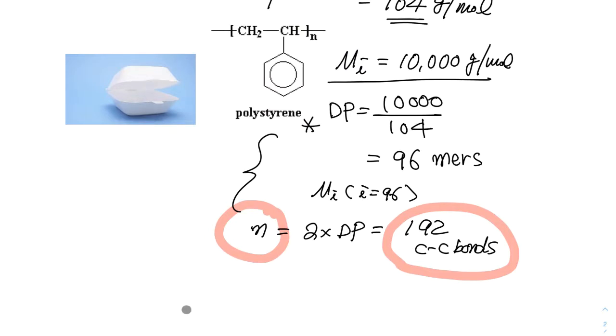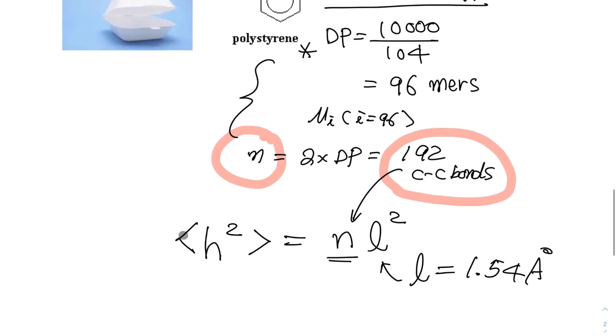And L is 1.54 angstrom for carbon-carbon bond. And that's the number of bonds. So, you can plug that in, and for the completely flexible coil. And in the real chain, in h squared, there is some correction factor, which is characteristic ratio.